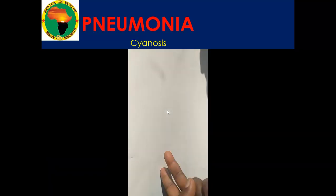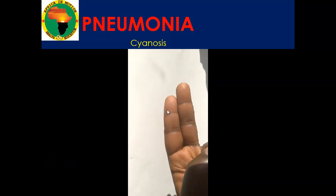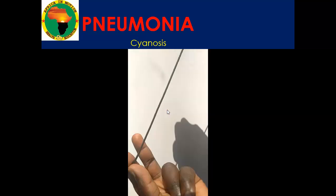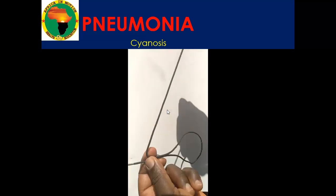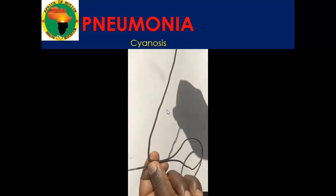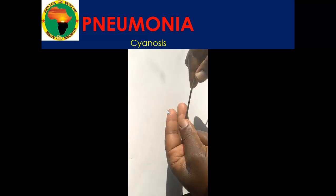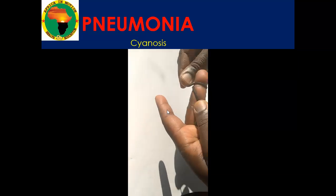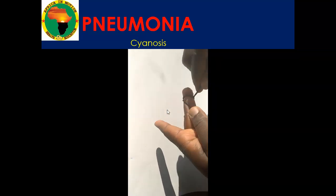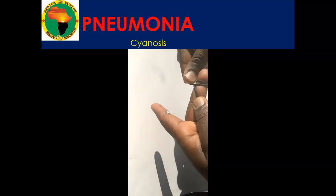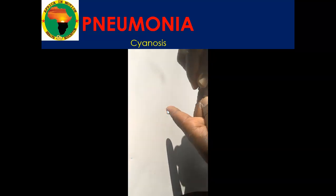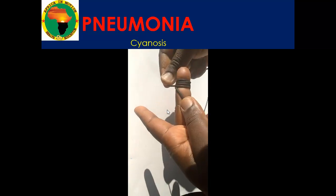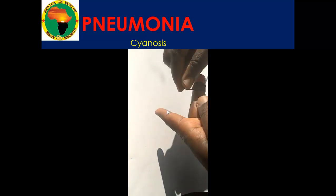We are going to observe these two fingers — they are both pink, they look the same, no problem. Now we are going to use a shoelace or a small thread. We tie it around one finger — here we are doing it on the middle finger. We are trying to block the blood circulation, the blood that is going to the distal part of the finger.